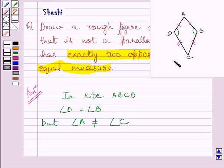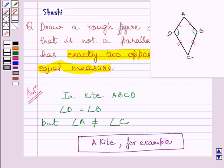So this is our required figure that has exactly two opposite angles of equal measure. So this is our required answer. This completes the session.